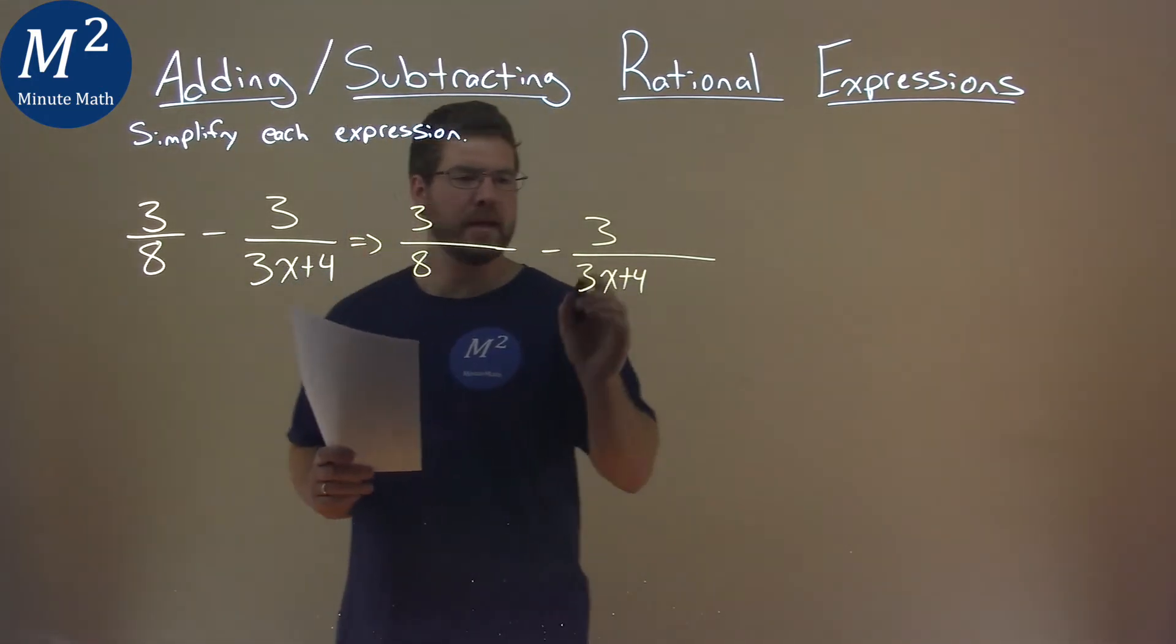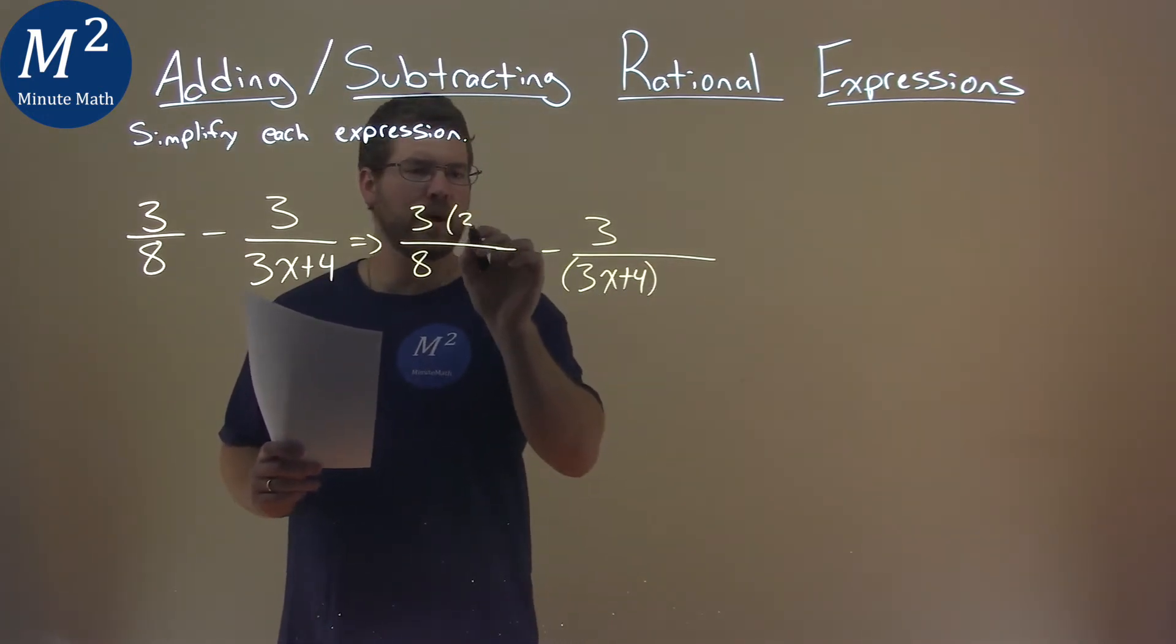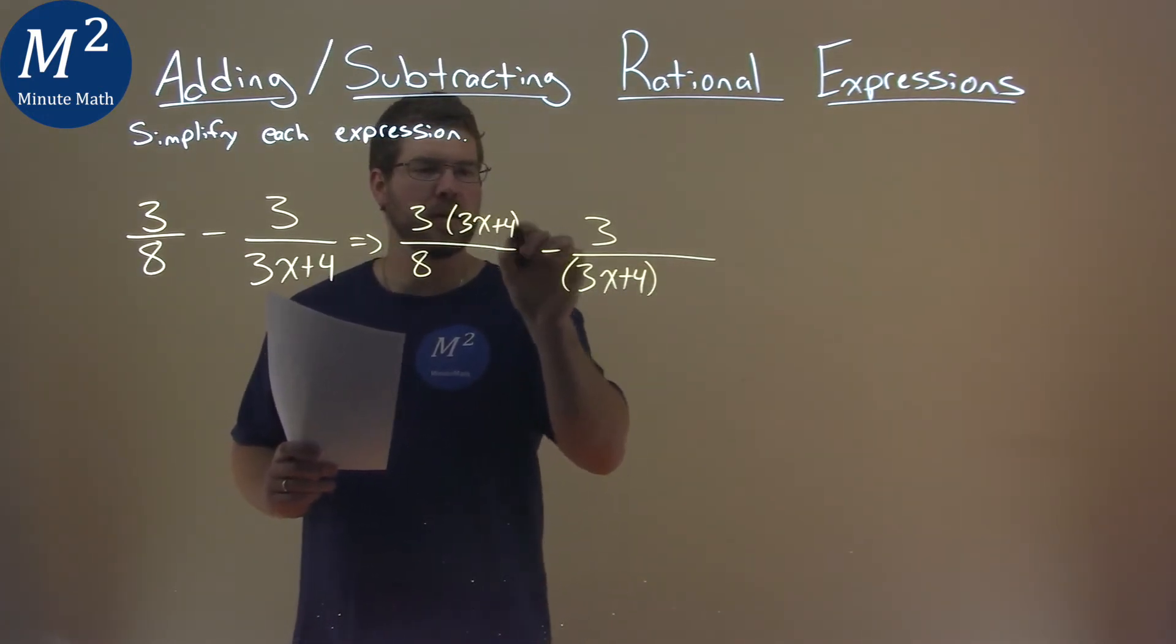minus 3 over 3x plus 4. And what I'm going to do is take this denominator, 3x plus 4, and I'm going to multiply it by the numerator, 3x plus 4 here, and over itself in the denominator, 3x plus 4.